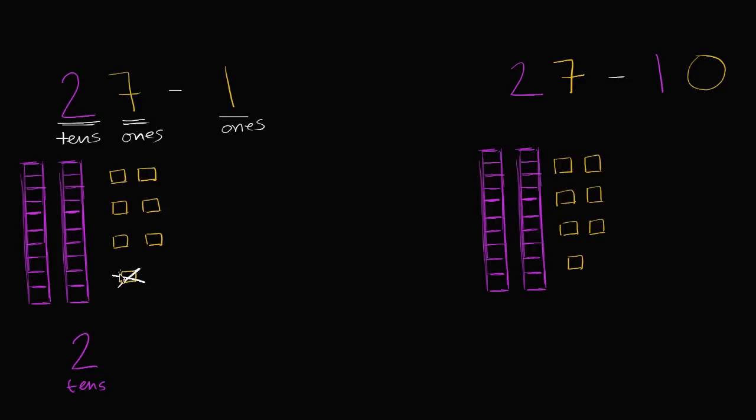Well, I used to have seven. I took one away. Now I have six ones. So two tens and six ones - we call that 26.